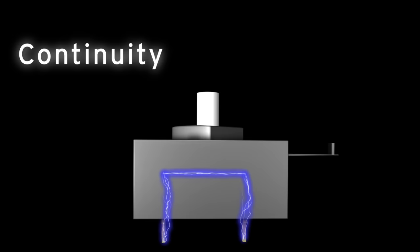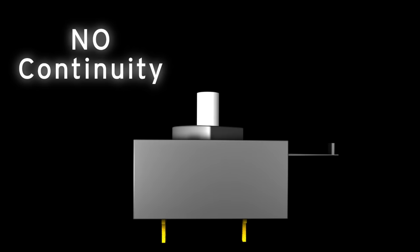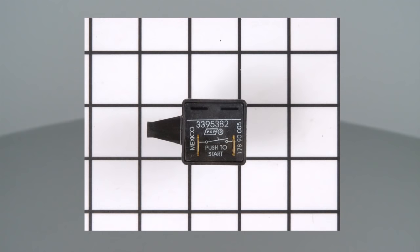If the switch has continuity, it should be functioning properly. No continuity means the electrical path is broken and the switch has failed.